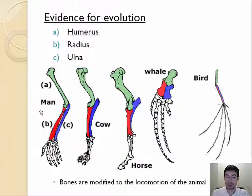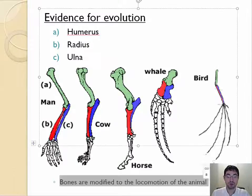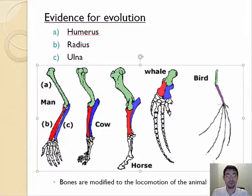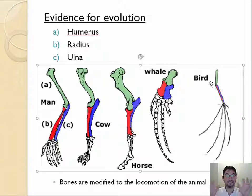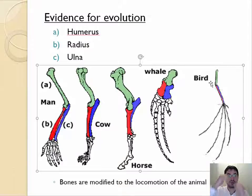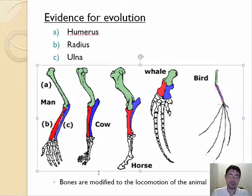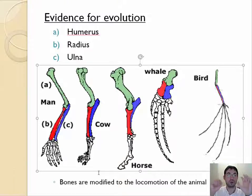These bones are modified to suit the method of locomotion. For flying, bats have very thin arms but long fingers, and they flap with their fingers. Whales have very thick bones for pushing water. Horses have one finger — actually their middle finger — and they stand on that finger with a very big nail: that's the hoof. And humans, who use our fingers not for walking but for holding things, have those long fingers and the opposable thumb.